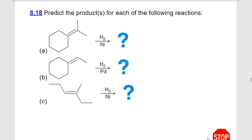Let's predict the products here. We have a double bond with hydrogen and nickel. This is a very easy reaction to predict—we're adding H and H across the double bond and we're going to add those syn.